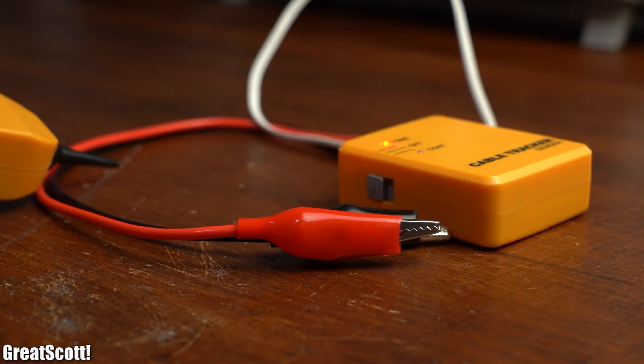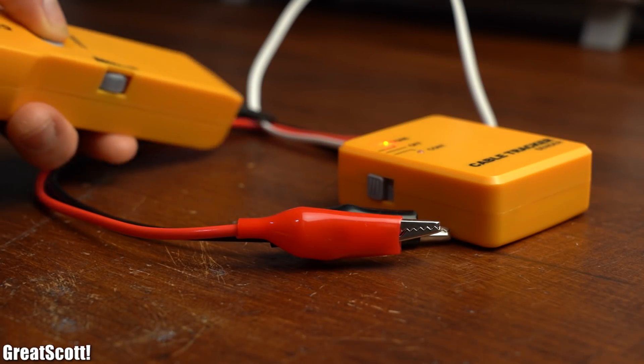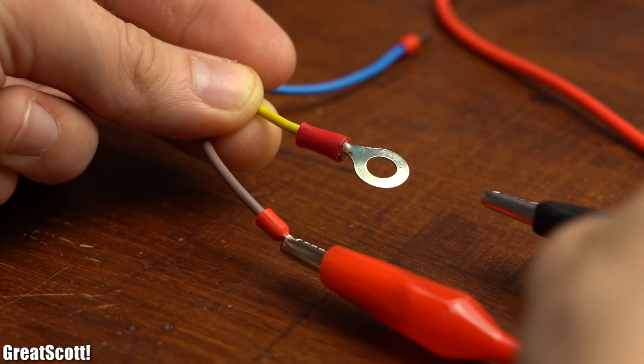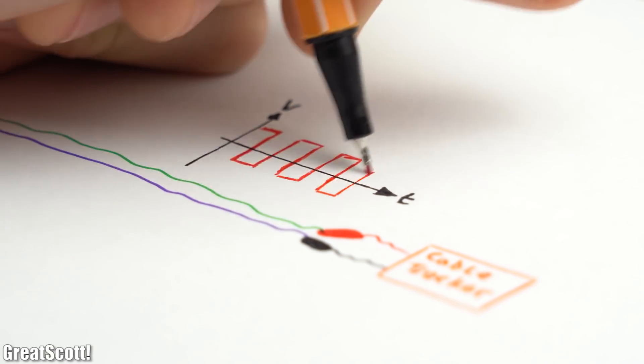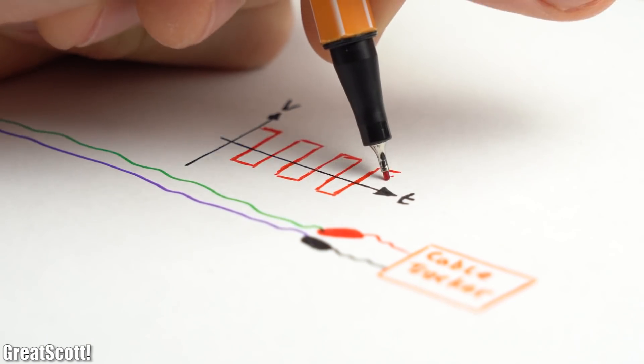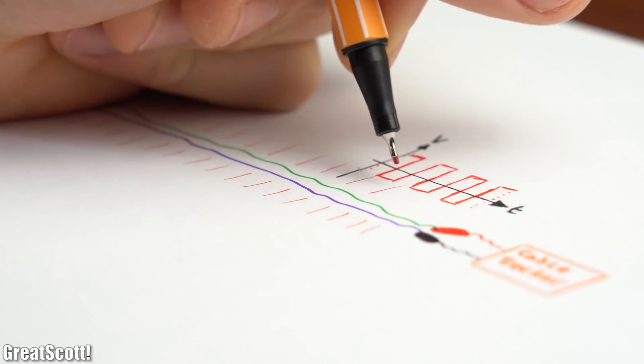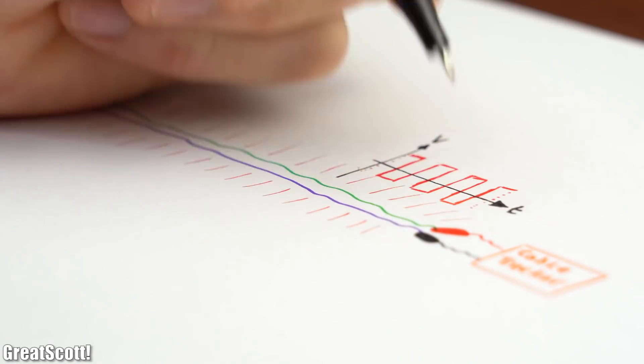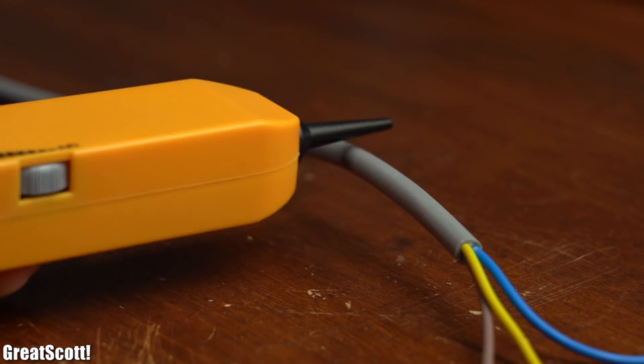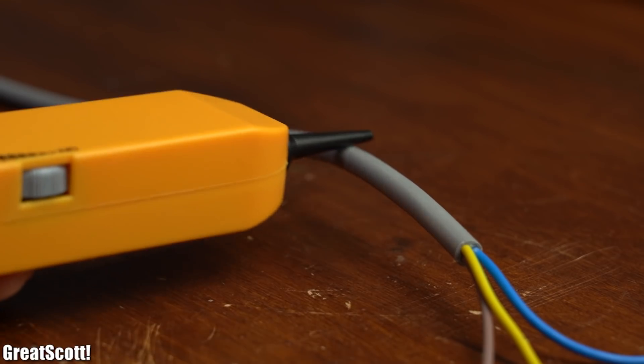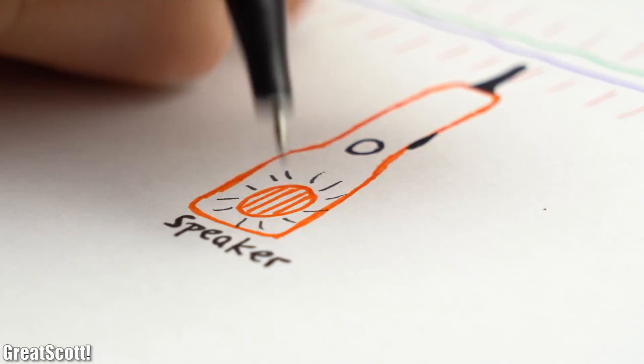Firstly, let's talk about the general functional principle of this tool. By hooking up the sender to a pair of wires, it basically sends a special voltage waveform through them and thus turns them into antennas which broadcast this waveform through the air.